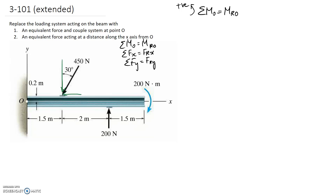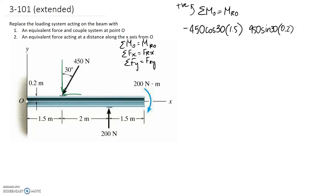Starting with the vertical part of the 450 newton force: it's going to be 450 cos 30 degrees, and the perpendicular distance back to our point of interest for the line of action is 1.5 metres. This is going to try and push clockwise about O, so it's negative. For the horizontal part it's 450 sin 30, and the distance back to point O for this line of action is 0.2 metres. The direction it pushes about O goes over the top and around, so that's anti-clockwise, which is positive.